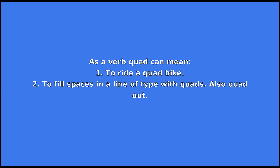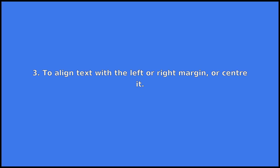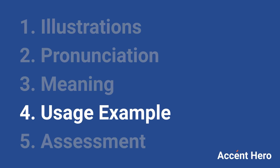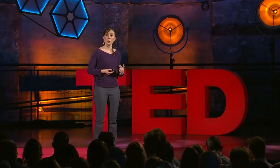As a verb, quad can mean: 1. To ride a quad bike. 2. To fill spaces in a line of type with quads, also quad out. 3. To align text with the left or right margin, or center it. 4. To put this in perspective, one quad of energy is roughly equivalent to 180 million barrels of oil.